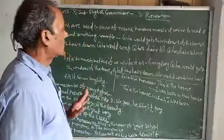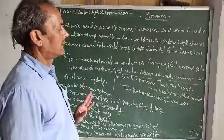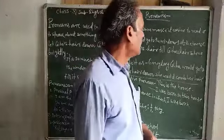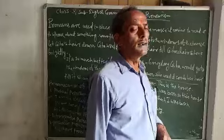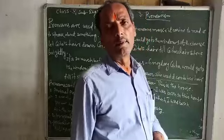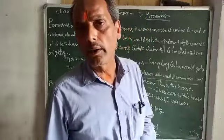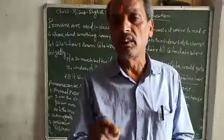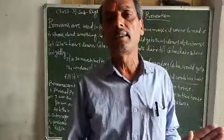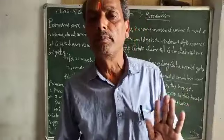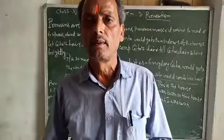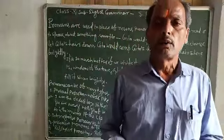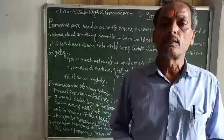For example: 'Gita would come. Gita is here. Till Gita is here.' You have already seen that the word Gita has been used many times. So this is not good English; this is not a good English sentence.